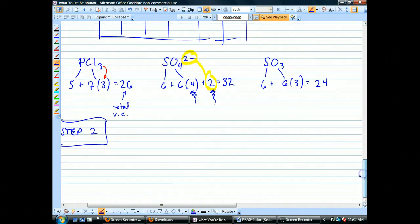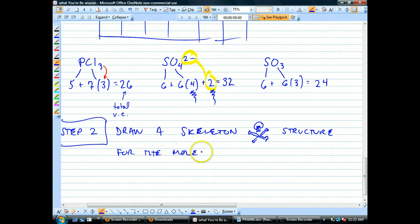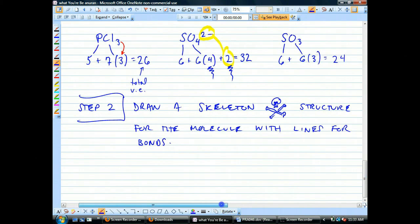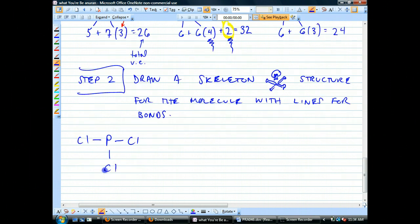Next step, step two. Draw a skeleton structure for the molecule with lines for bonds. Now, there's no dots yet. We haven't even drawn any dots yet. See, that's the thing. In this method, we're drawing lines before we've even drawn dots. Bonds take priority here. So here we go. So this one becomes this.